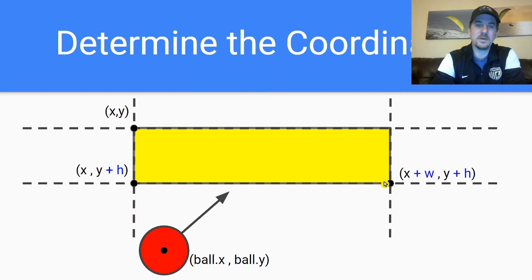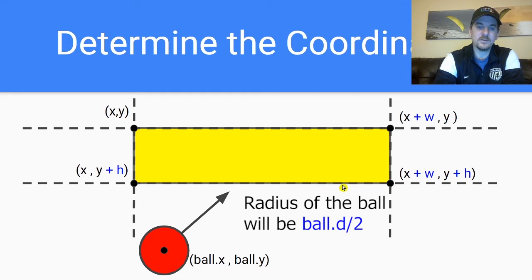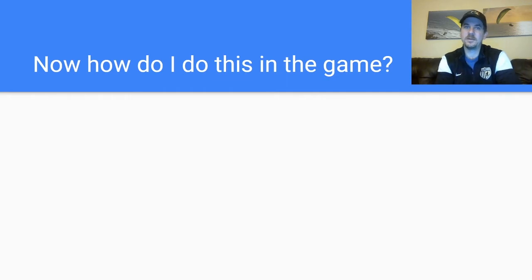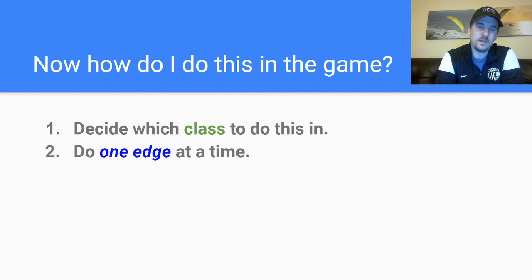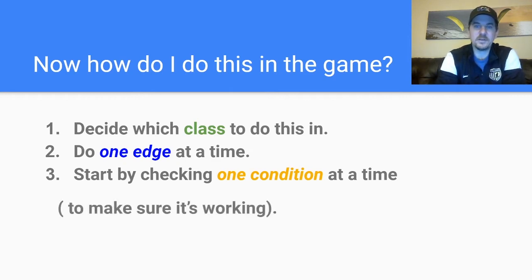The last thing we have to think about is also the width of the ball — we have to think about the Y coordinate too. We're going to have to consider the diameter of the ball. So the X, the Y, the ball's X, the ball's Y, and the diameter of the ball are the things that will help us determine which edge we've hit. So how do we do this in the game? I want you to think about this and try it on your own. First, decide what class to do it in. Then do one edge at a time — don't try to do all four at once and then say it doesn't work or the ball's getting stuck. Check your conditions as you write them, and don't write too much code before verifying it works.